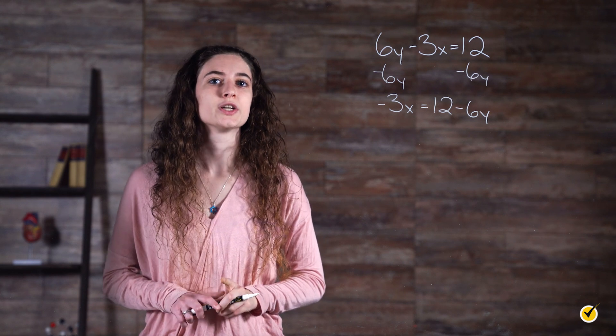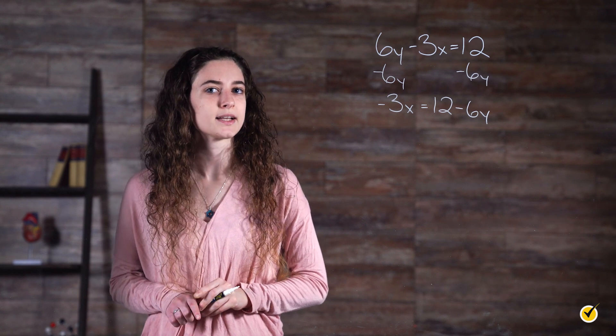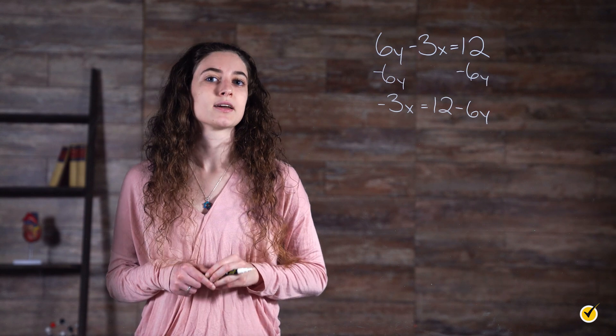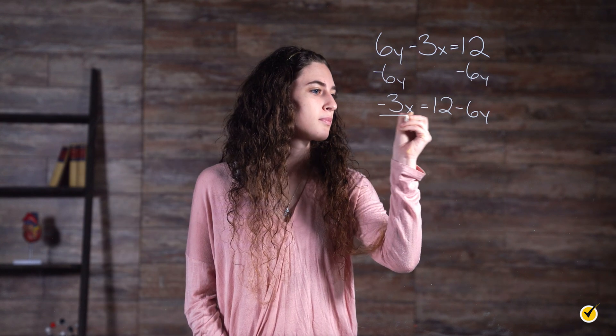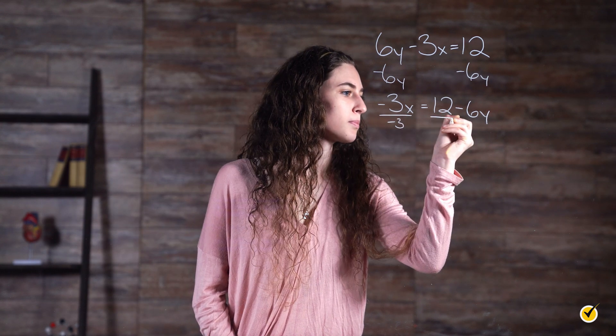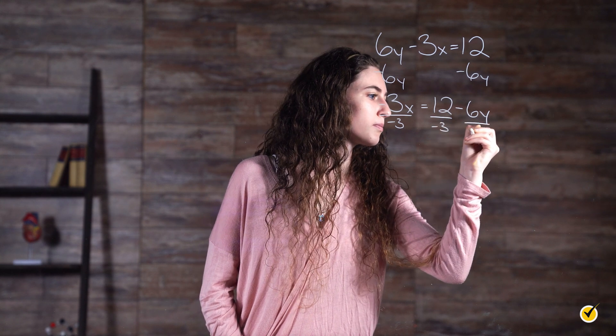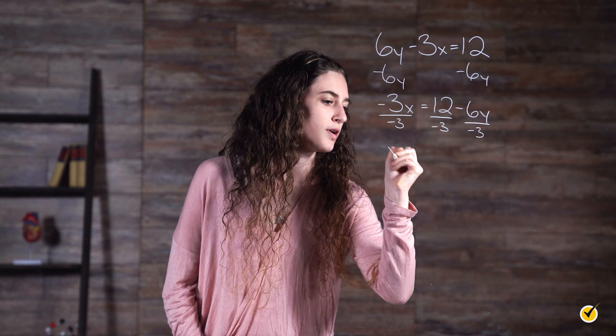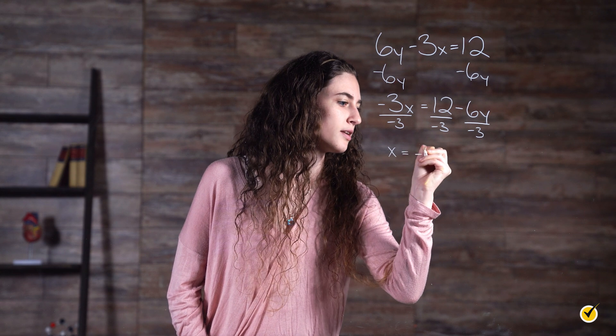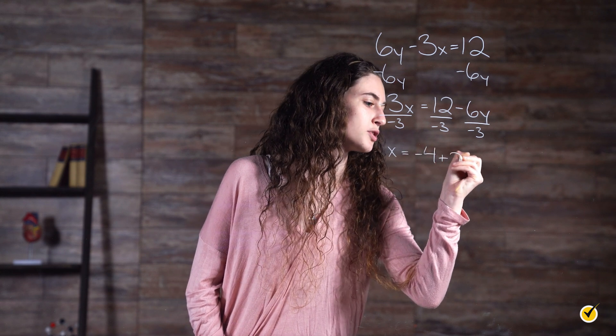Then, we divide the whole equation, which means both parts of the right-hand side of the equation, by negative 3. So x equals negative 4 plus 2y.